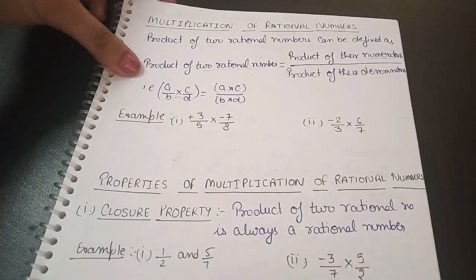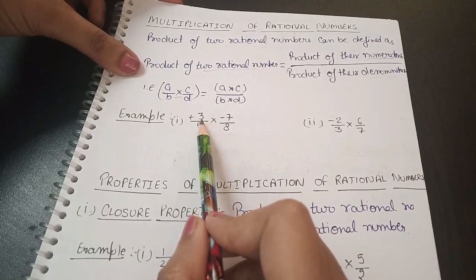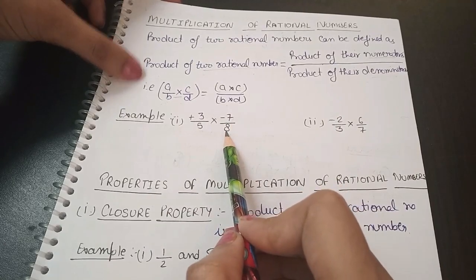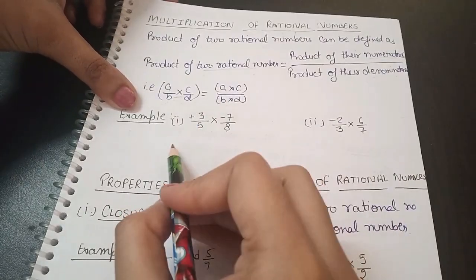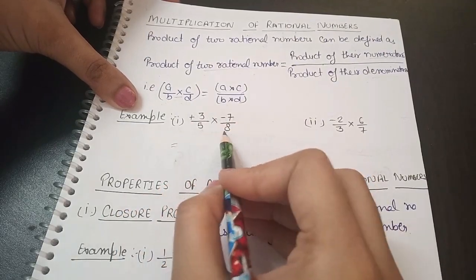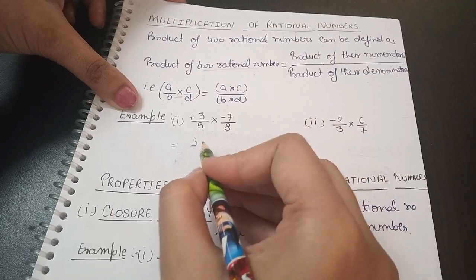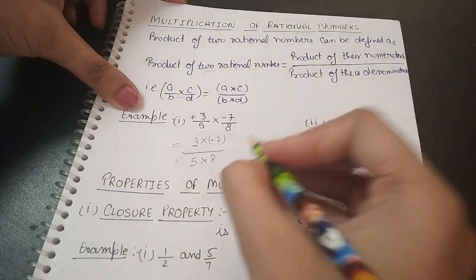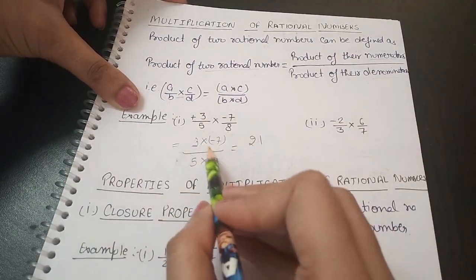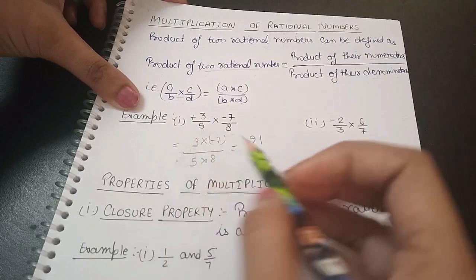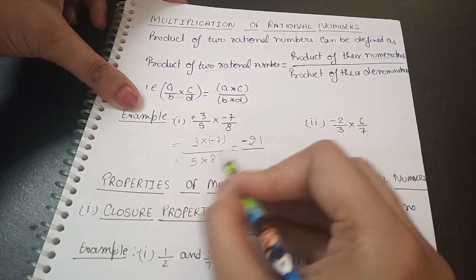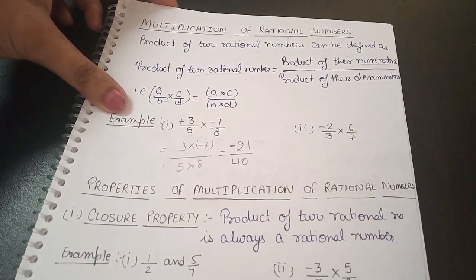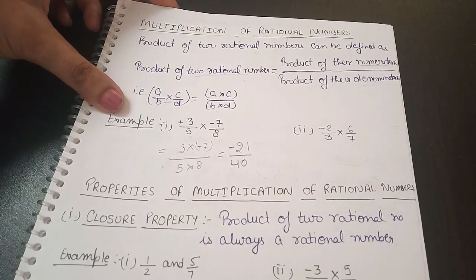For example, we have two rational numbers: the first is 3/5 and the second is -7/8. According to the formula, we multiply numerator by numerator and denominator by denominator. So we get 3 × (-7) divided by 5 × 8. That gives us -21 in the numerator — minus times minus gives plus, but here it is minus — and 40 in the denominator. So the answer is -21/40.